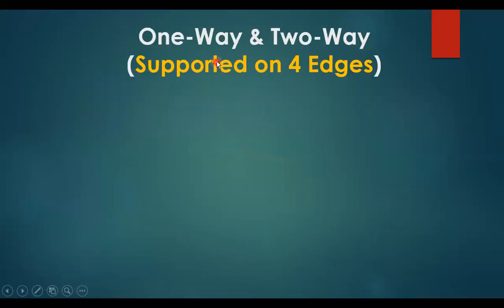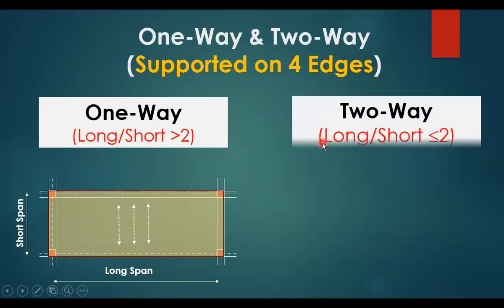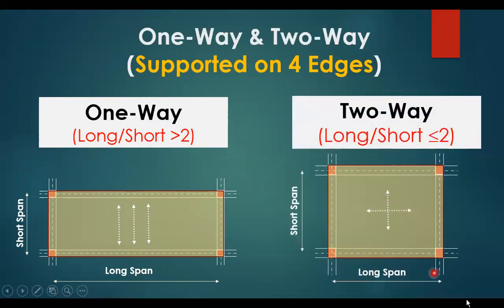For a slab supported on four edges: if the long span divided by the short span is greater than two, it is classified as a one-way slab and the loads will go in the short direction. However, if the long span divided by the short span is less than or equal to two, it is classified as a two-way slab, the loads go in both directions, and we design for steel reinforcement in both directions.